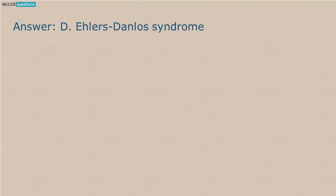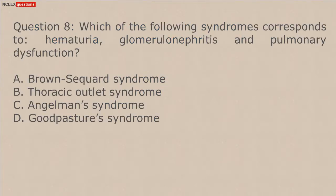Question 9: Which of the following syndromes corresponds to hematuria, glomerulonephritis, and pulmonary dysfunction? A. Brown-Séquard Syndrome. B. Thoracic Outlet Syndrome. C. Angelman's Syndrome. D. Goodpasture's Syndrome.